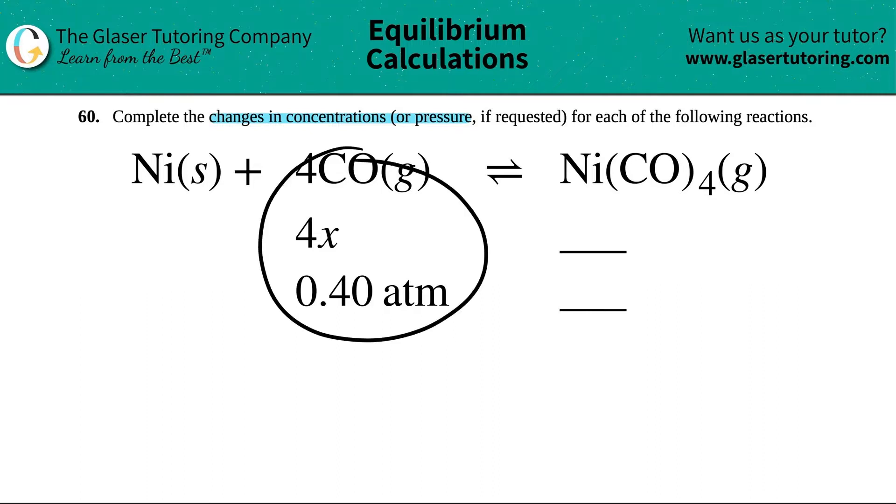So we have to start with what we're given. Now in this case, we have four carbon monoxides, and this was going up by 4x. I know that it's going up because this value is a positive value. I like to keep the positives there if I can.